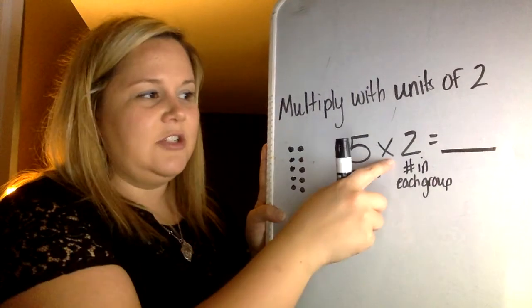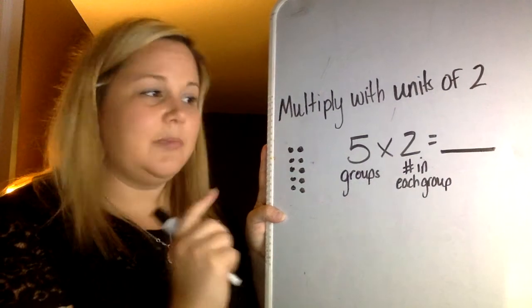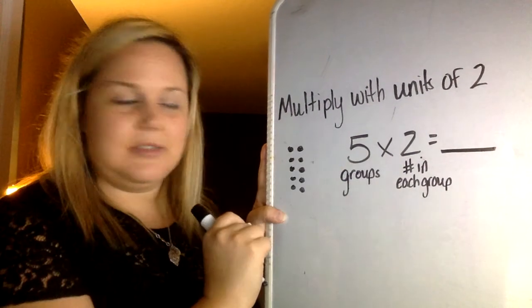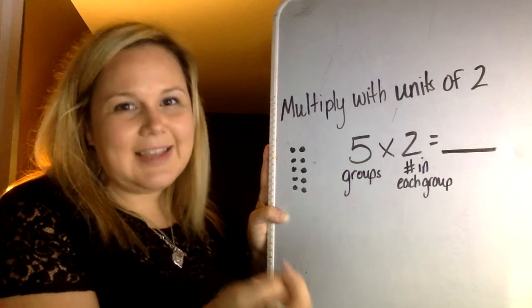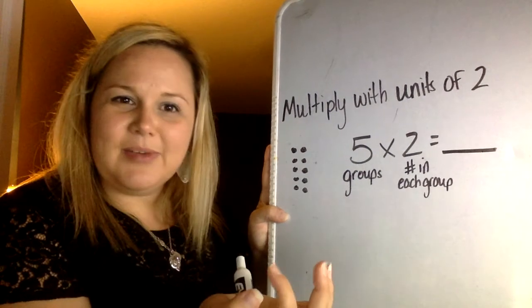I'm going to count by 2 because that's how many is in each group, and I'm going to count by 2 five times. So let's write that down. You guys want to skip count with me? Let's try it.